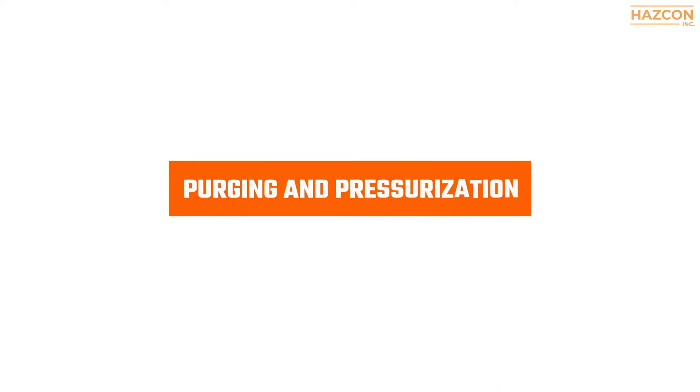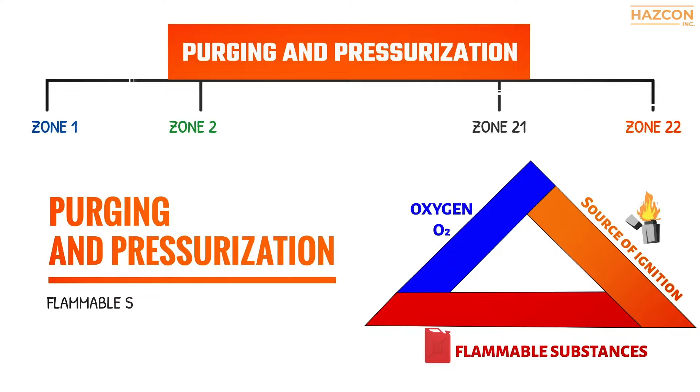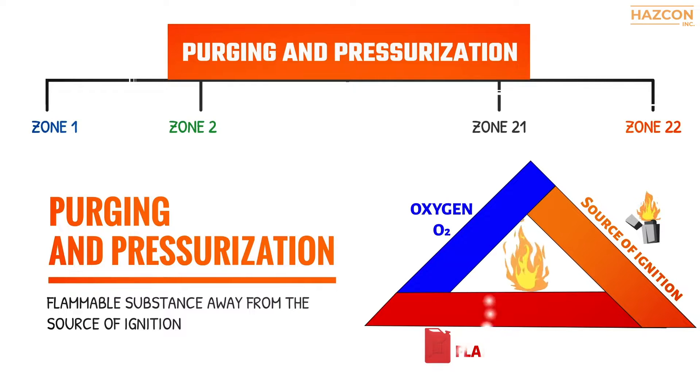The purging and pressurization protection technique, known as EXP, is used for electrical equipment to be installed and used in Zone 1, 2, 21, and 22 hazardous locations. Purging and pressurization involves keeping the flammable substance away from the source of ignition.